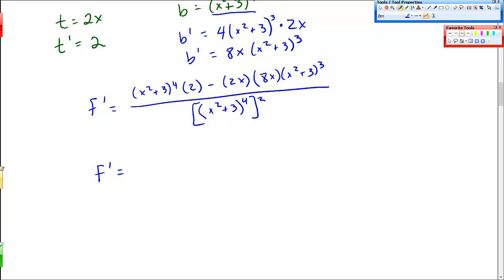Now this should simplify. f prime is, and again I can factor out this x squared plus 3. So I'll factor out an x squared plus 3 cubed. What's left is x squared plus 3 times 2 in this first piece, minus 2x and 8x in this second piece. And then here in the denominator, it's x squared plus 3, and 4 raised to the second power is 8. So these will cancel. Three will cancel here and we'll be left with 5.